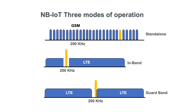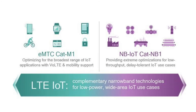NB-IoT has three modes of operation. It can operate as a standalone technology in the GSM band using just 200 kHz. It can operate within LTE in-band using 200 kHz. Or it can sit in the LTE guard band, again using 200 kHz.